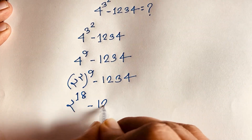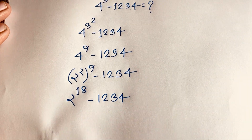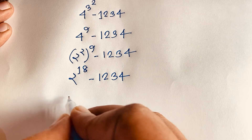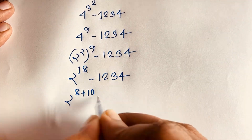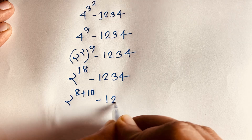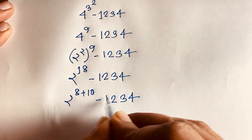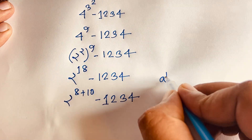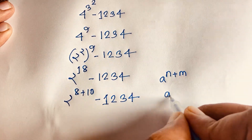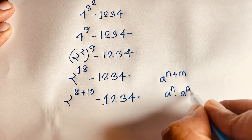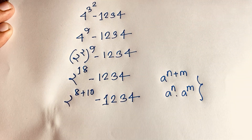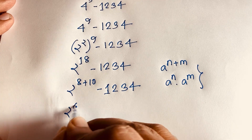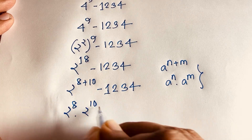Now I can see easily 2 to the power 18 can be written as 2 to the power 8 plus 10, minus 1234. We know the exponential law: a to the power n plus m equals a to the power n times a to the power m. According to this law, this expression becomes 2 to the power 8 times 2 to the power 10, minus 1234.